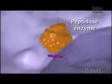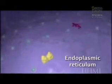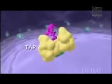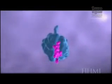Those shorter fragments are then acted upon by additional peptidase enzymes present in the cytoplasm and broken up into smaller peptides. Those peptides go to the endoplasmic reticulum, gain entry through a molecule called TAP, and once inside the endoplasmic reticulum, if they're the right conformation, they will bind into the binding groove of a developing MHC class I molecule.